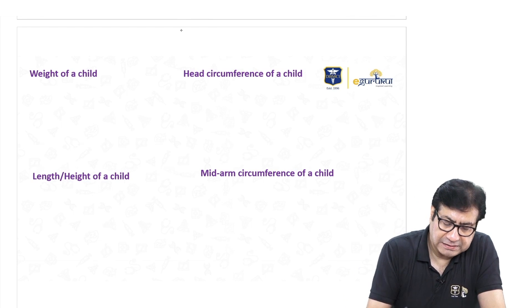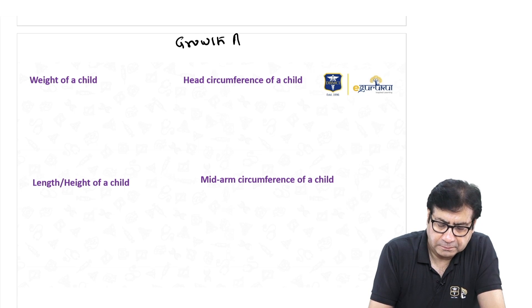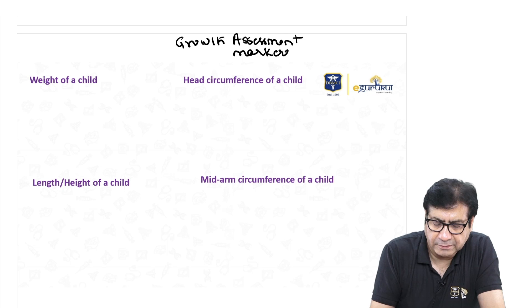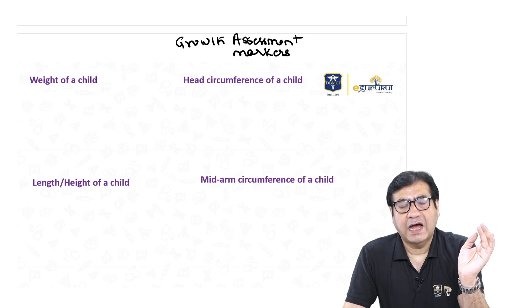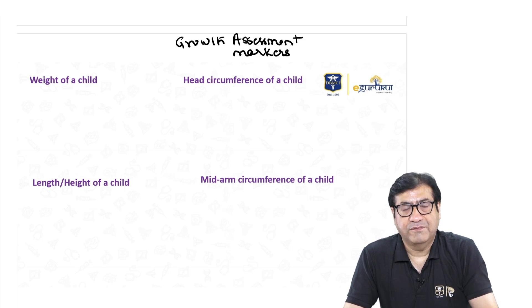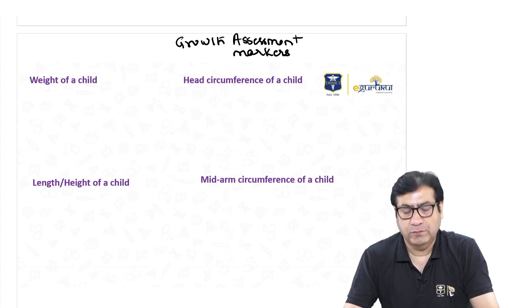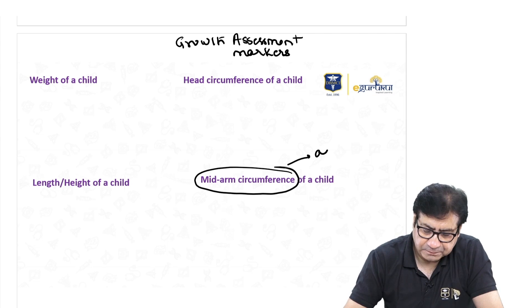There are certain growth assessment markers you should be aware of for your exam. These include weight, height or length, head circumference, and mid-arm circumference. Weight, length, and head circumference are all age-dependent markers of growth assessment, while mid-arm circumference is an age-independent marker of growth assessment.